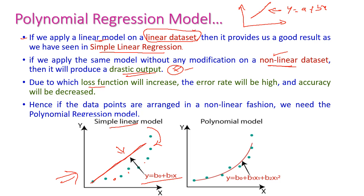The problems are: the loss function will increase, the error rate will be very high, and the accuracy will be very much decreased. In that situation, we need to apply the polynomial model to get the correct predicted result: y = b0 + b1·x1 + b2·x1².